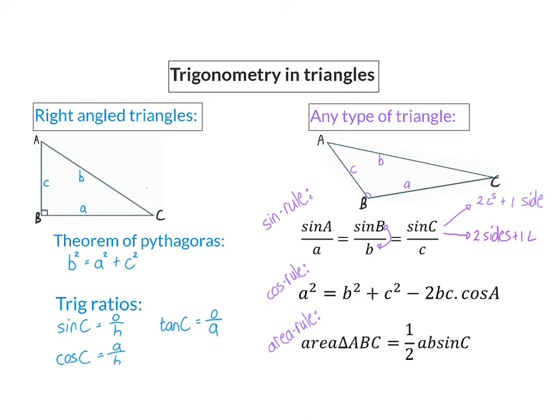For you to be able to use the cos rule, you need two sides and the included angle. So very important, if I have sides B and C, it has to be angle A, which is in between the two sides. Then I can calculate the third side.